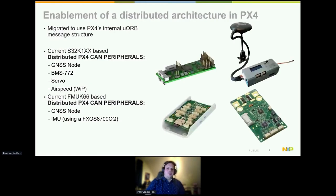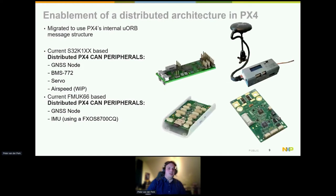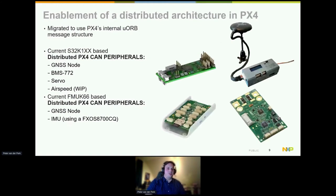We have made several PX4 CAN nodes. We hooked up the UCAN node to a GPS to make a GPS node, we have BMS nodes based on the same chip, and we can also control servo motors with it. We are expanding that with airspeed and distance sensors. The idea is a distributed system with multiple GPSs published to the whole system, with no point-to-point connection between the flight controller and GPS.